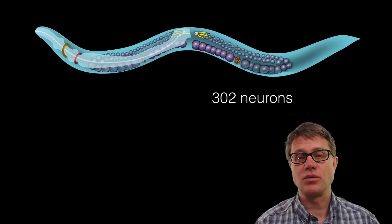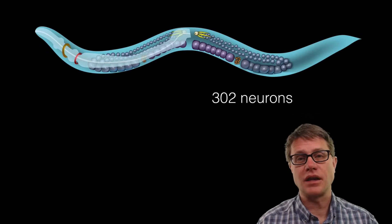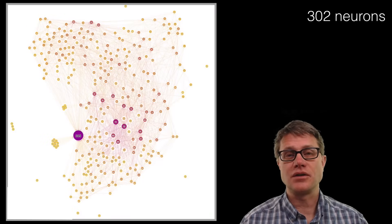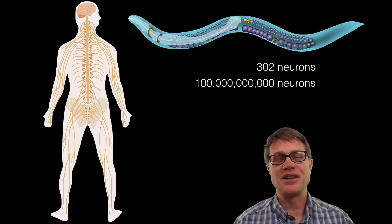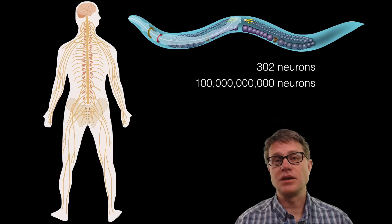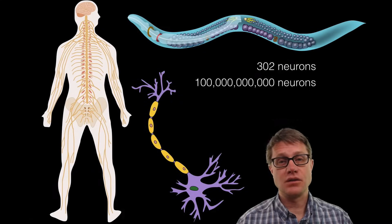In a simple animal like a nematode worm they only have 302 neurons. But what they allow them to do is to take information in from their surroundings and respond to that information. If you look at how those 302 neurons are connected it is very complex. Now humans are quite a bit bigger and we have 100 billion neurons in our body. Most of those are centered in the central nervous system, in the brain and the spinal cord. But the basic unit of our nervous system is the same — it is the neuron.